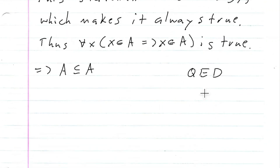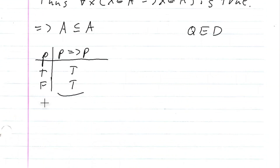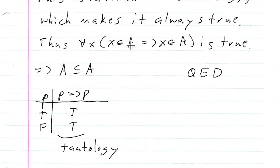Let's go ahead and do the truth table to show why this is a tautology. If we have P, then P implies P — P can either be true or false. True implies true is true, and false implies false is true. So P implies P is a tautology. Since for every X, X in A implies X in A is a tautology, that means this statement is always true. And if this statement is true, that means A is a subset of itself.